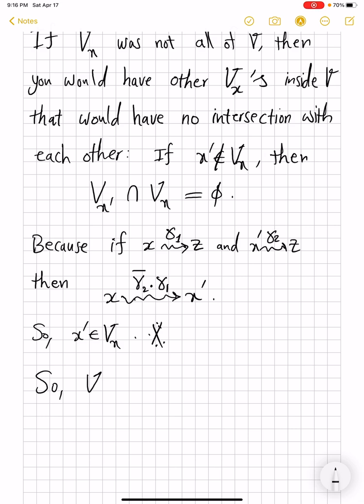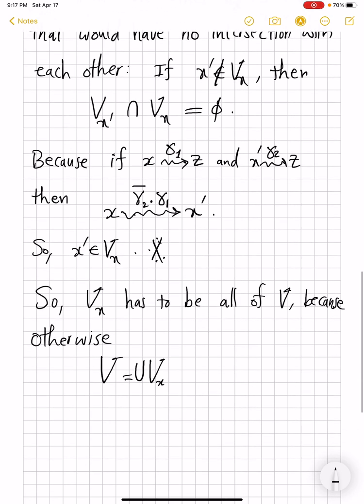So Vₓ has to be all of V, because otherwise V would be some union of Vₓ's where you take Vₓ, if it's not all of your V you find some point outside it and you add the new Vₓ to it. And if it is still not all of your V, then you find another point outside and you add Vₓ of that point, and so on. So V ultimately is union of Vₓ's where each Vₓ is open and non-empty.